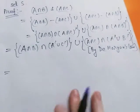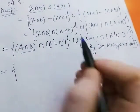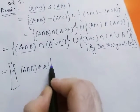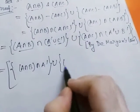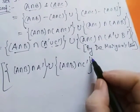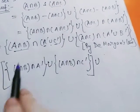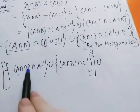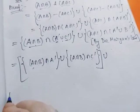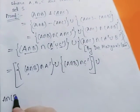Now this equals — we use here the distributive law. Suppose this is A, this is B, this is C. Then this will be A intersection B intersection A complement union A intersection B intersection C complement, and this union — A intersection B intersection A complement union C complement.